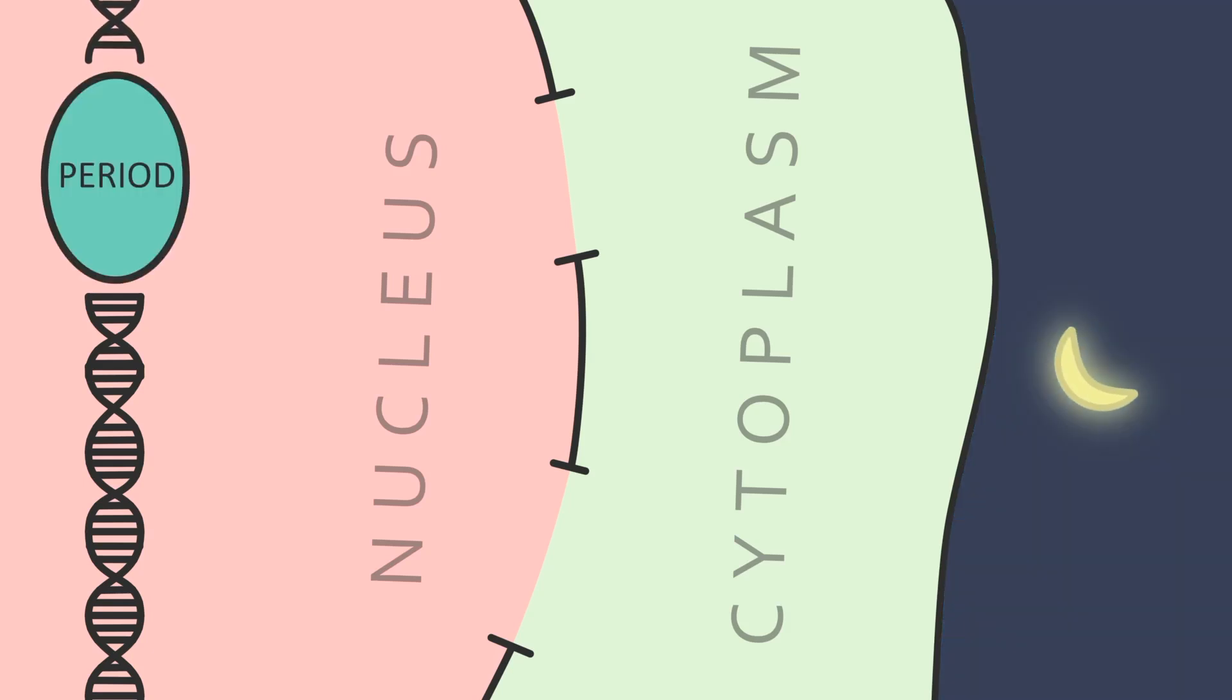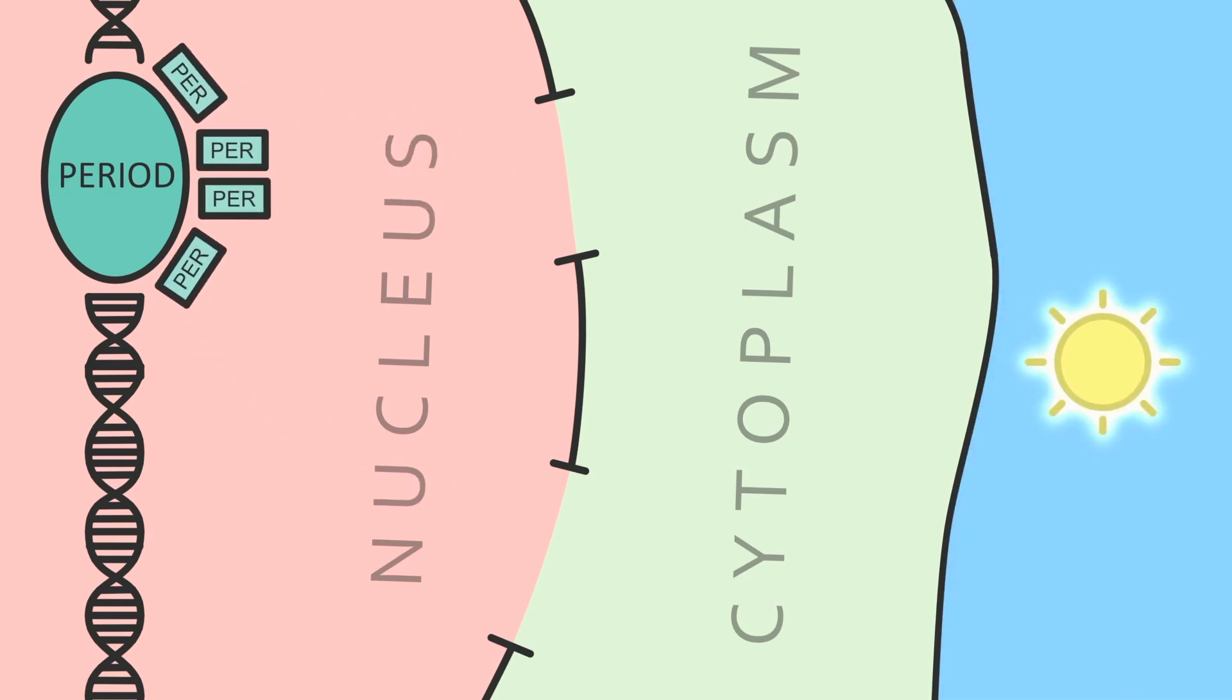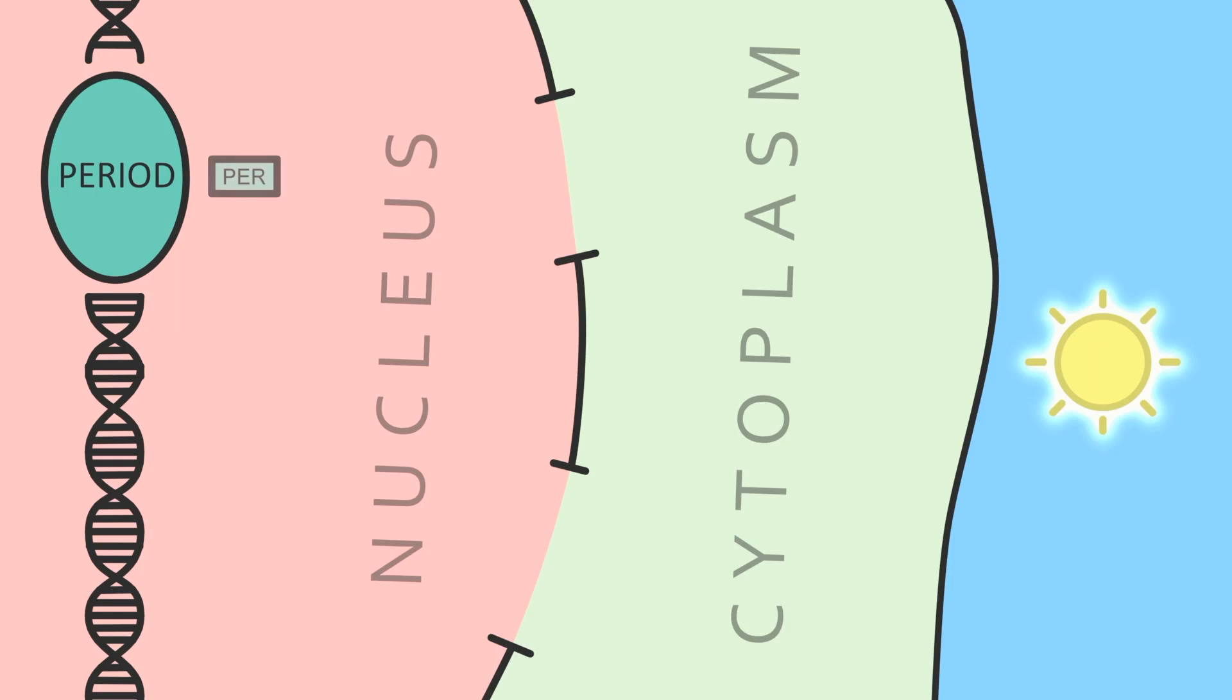Through the afternoon and night, it makes a protein, PER, which collects in the cell's cytoplasm. At night, after enough protein buildup, PER returns to the nucleus and stops the period gene from making more protein. Then in the morning, PER breaks up, which allows the cycle to restart.